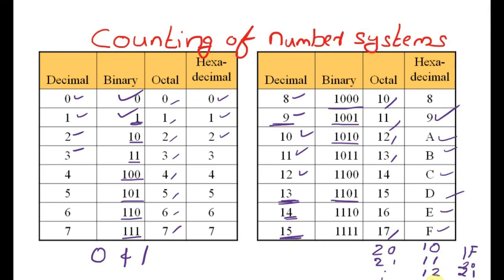To summarize: in the decimal number system, we start with 0 through 9, then go to two digits — 10, 11, up to 19, then 20, 21, up to 29, and it continues. In binary, we start with 0, then 1 — all symbols are used — then move to two digits: 10, 11, then three digits, and so on. In the octal number system, we start with 0, 1, 2, 3, 4, 5, 6, 7, and after 7 go directly to 10, then 11, up to 17, then 20, 21, and on. In the hexadecimal number system, which is alphanumeric, we start from 0, 1, 2, up to 9, then a, b, c, d, e, f, and after f it is 10, 11, 12, and it continues.